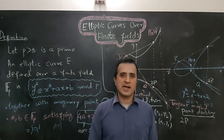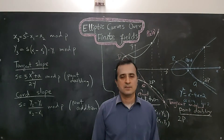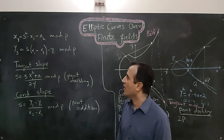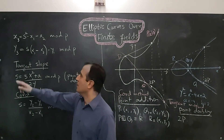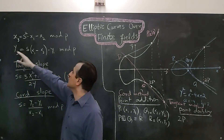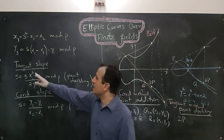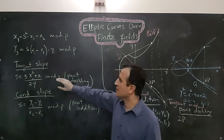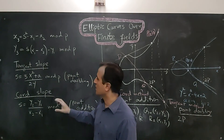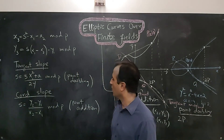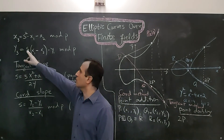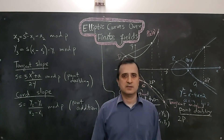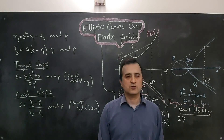Now let's write these operations mathematically. The new point coordinates (x3, y3) can be found using these equations. The variable s represents slope: in the case of point doubling, s is the slope of the tangent and is given by one equation; in the case of point addition, s is the slope of the chord and is given by a different equation. We will now use these equations to solve some problems.